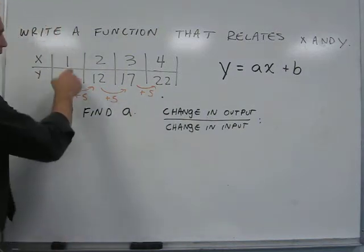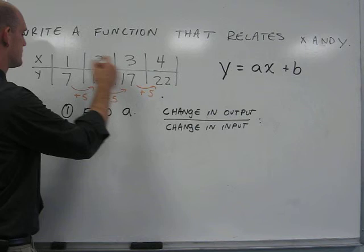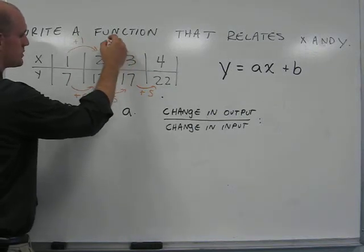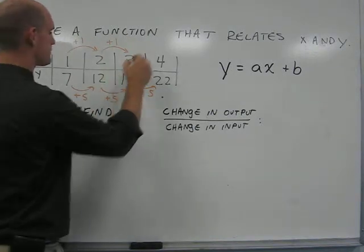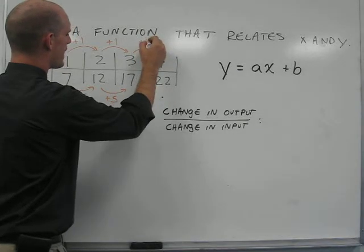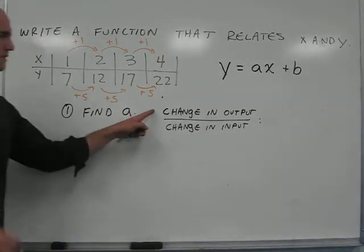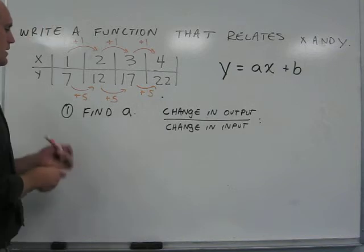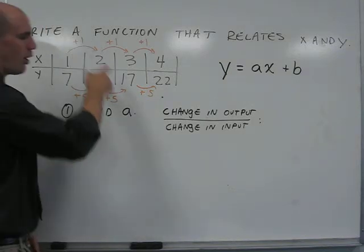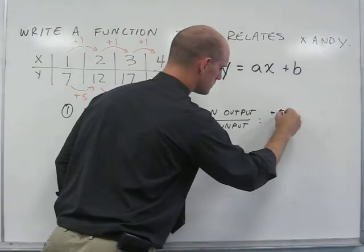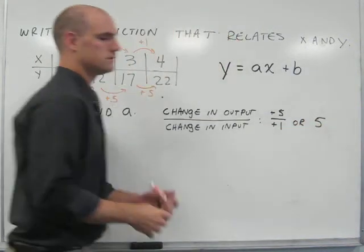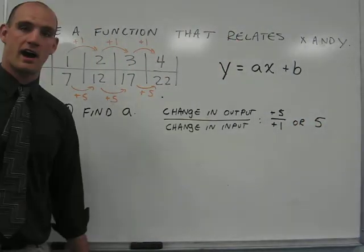Now, the change in the input can be found by comparing consecutive x terms. From 1 to 2, we add 1. 2 to 3, we add 1. And 3 to 4, we add 1. So, a fraction comparing the change in output over the change in input could be plus 5 over plus 1, or a equals 5.